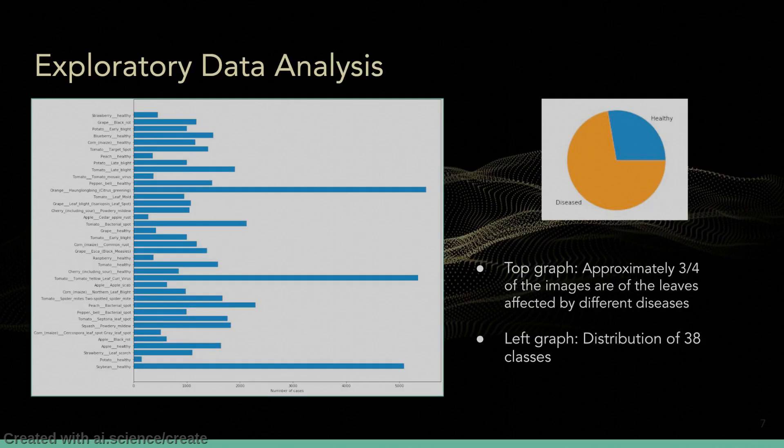In this slide, two graphs are shown. In the bar chart, you can observe the distribution of 38 classes in the dataset. Apparently, a couple of plant-disease pairs have much more samples than the others. The pie chart also shows that our dataset is imbalanced — approximately 75% of the leaves are diseased, while the healthy ones comprise only 25% of the dataset.